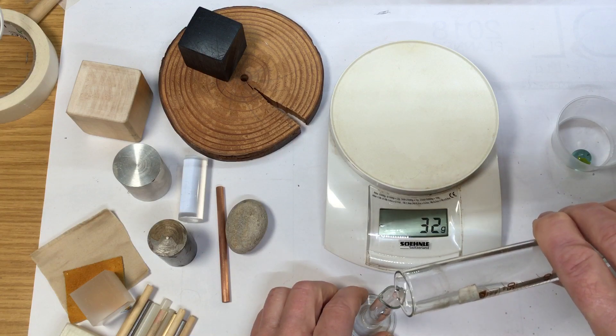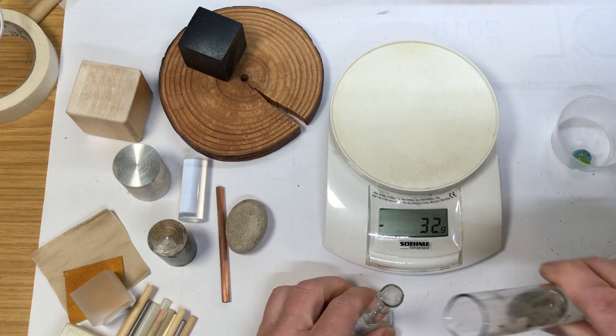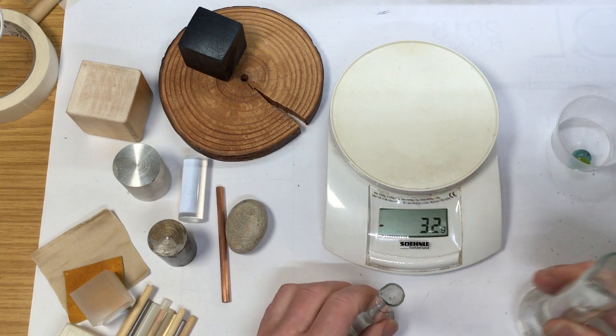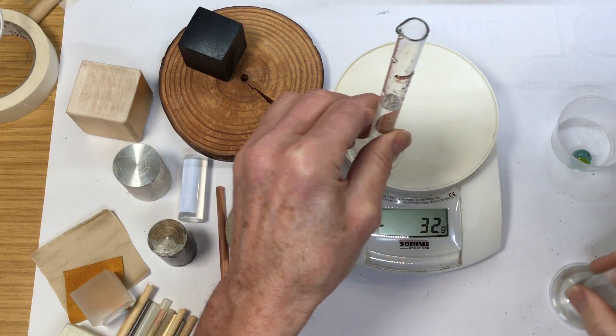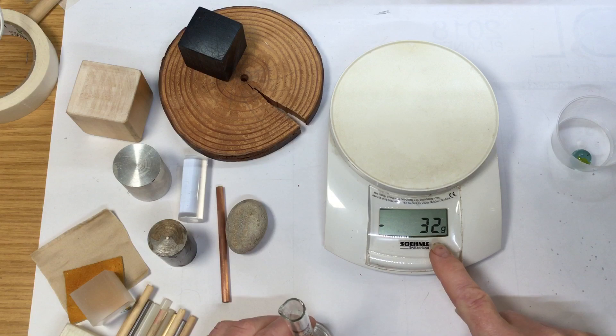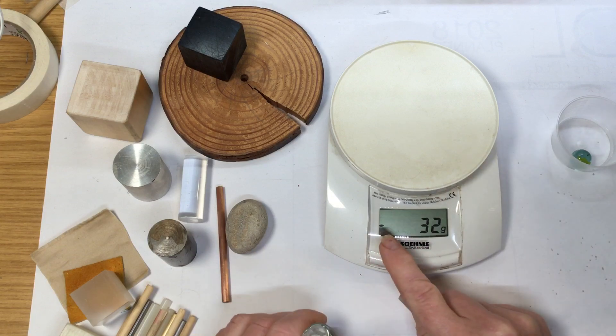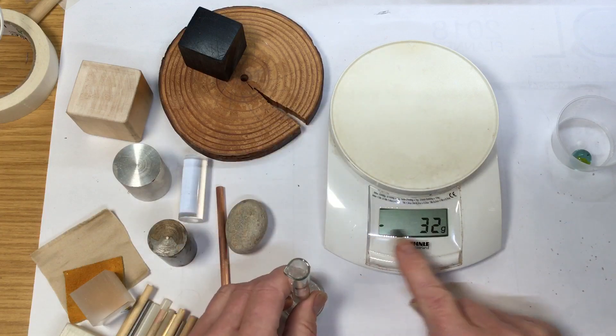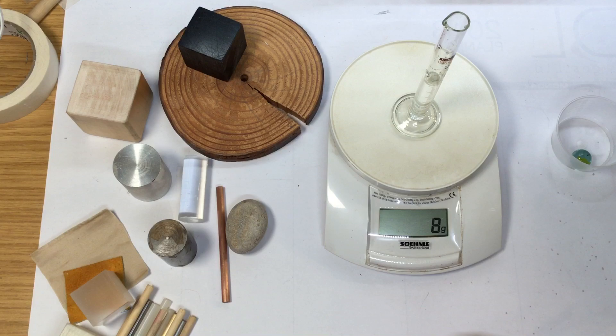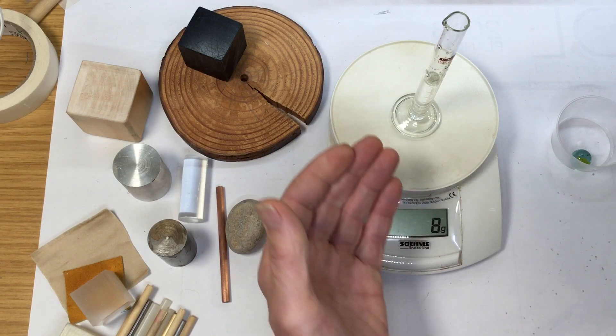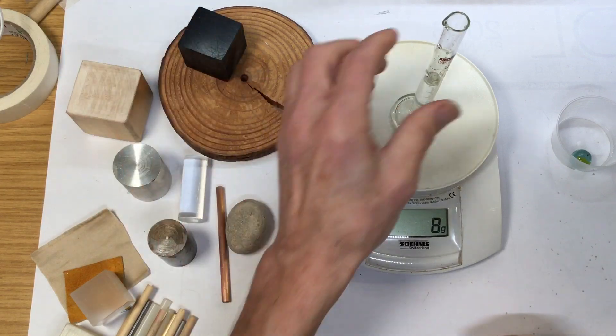I've just measured out seven milliliters there. Now we've got zero - the zero's disappeared because we've taken the container off and it's saying minus 32. Pop it back on, and it says about 8 grams. Well, I don't think that's very accurate.